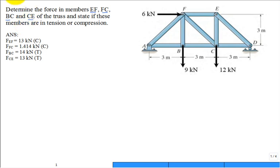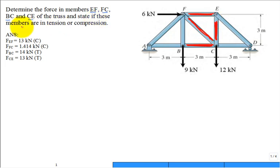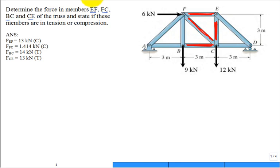First, let's identify where these members are: EF right here, member FC right here, member BC right here, and member CE right here. The state of each member — tension or compression — is our traditional question. Here are the answers so you can see the layout.